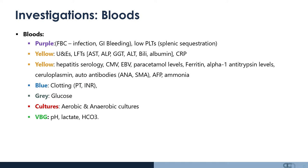A blood gas, including an arterial blood gas, is useful to help calculate pH, lactate, and bicarbonate. Investigations should be tailored around the aetiology.